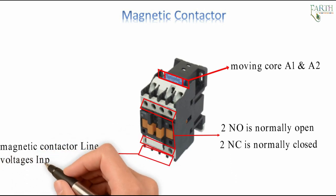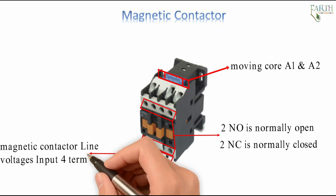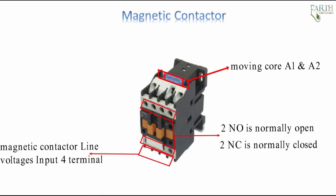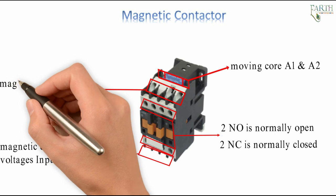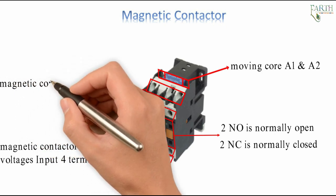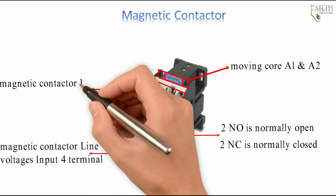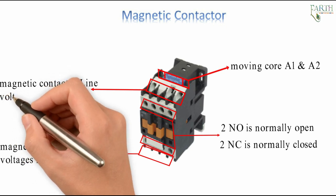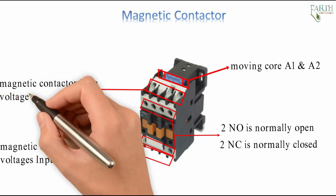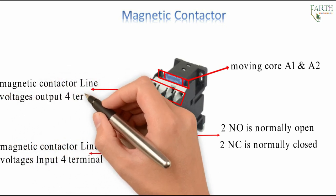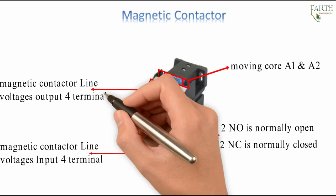On the magnetic contactor, line voltage is input at the input terminals, and line voltage is output at the output terminals.